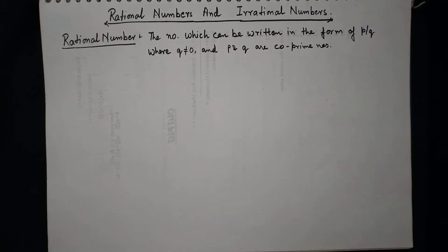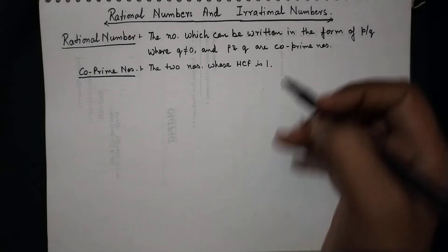So the co-prime numbers are the two numbers whose HCF is 1, whether it is a prime or not, that hardly matters. If you take the example of—